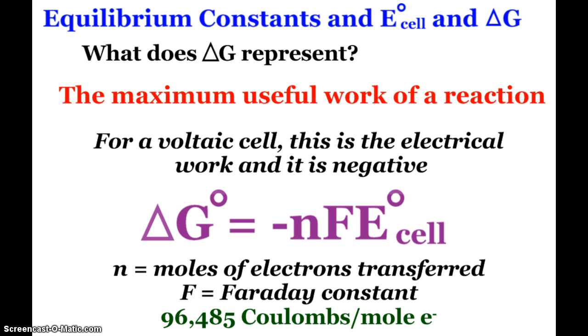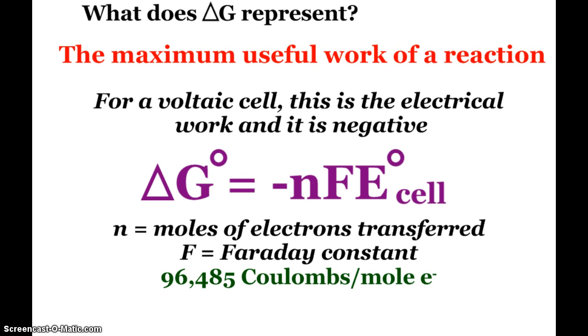What we end up having is this equation that is given to you on your AP test taking packet, that delta G zero is equal to negative n F and then the E zero of our cell. N is representing the moles of electrons that are transferred. F is Faraday's constant, 96,485 Coulombs per mole of electrons.